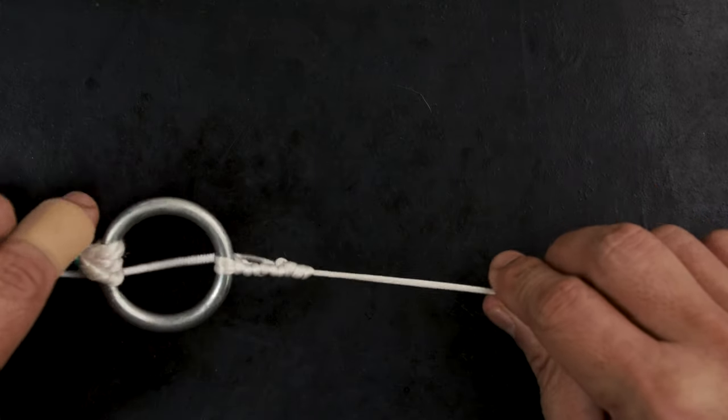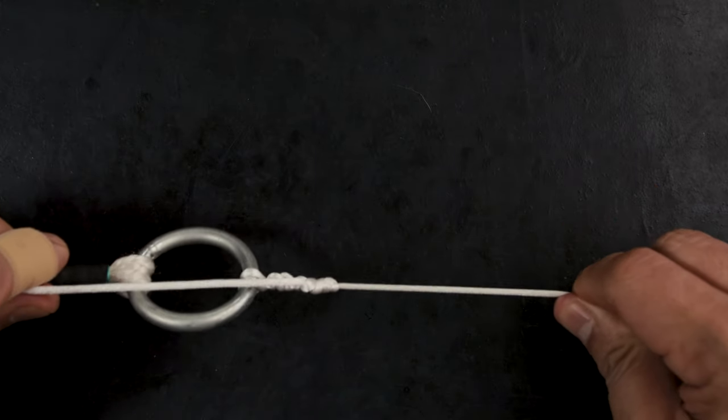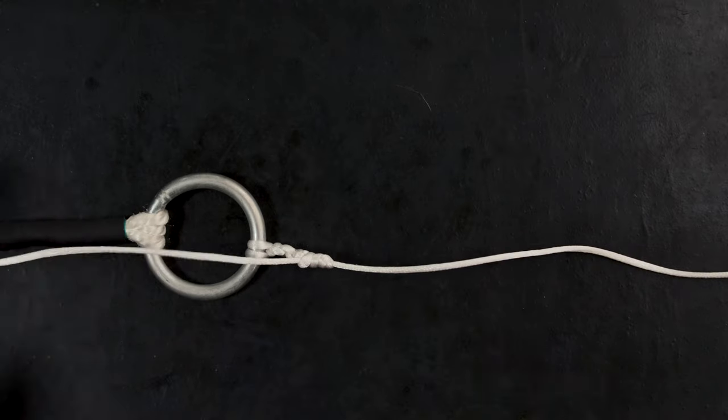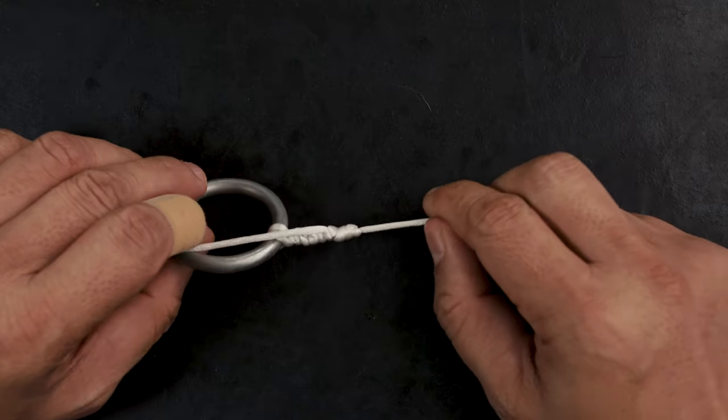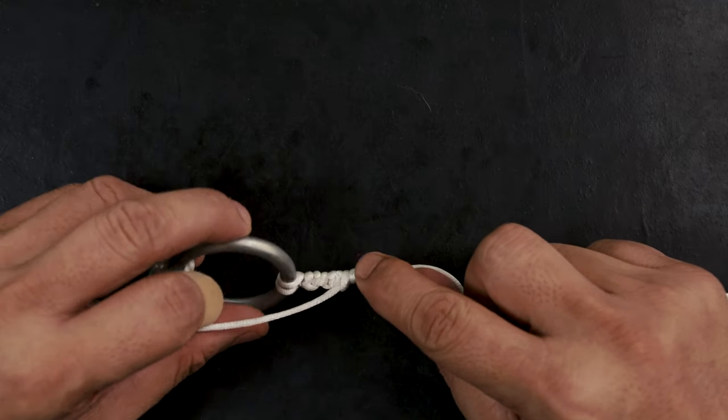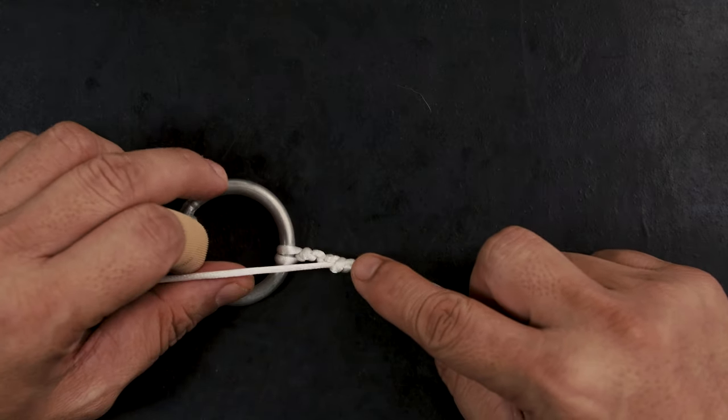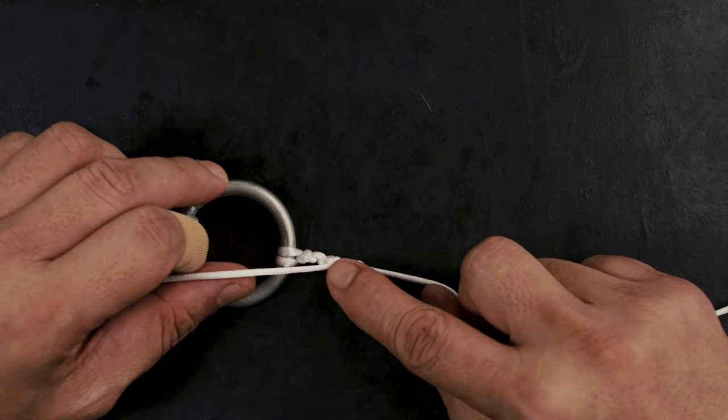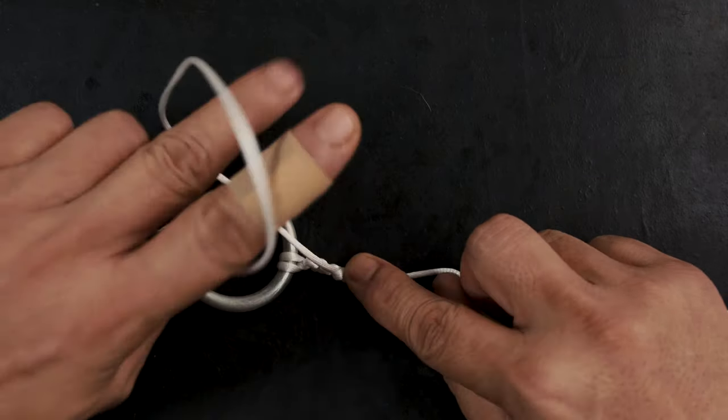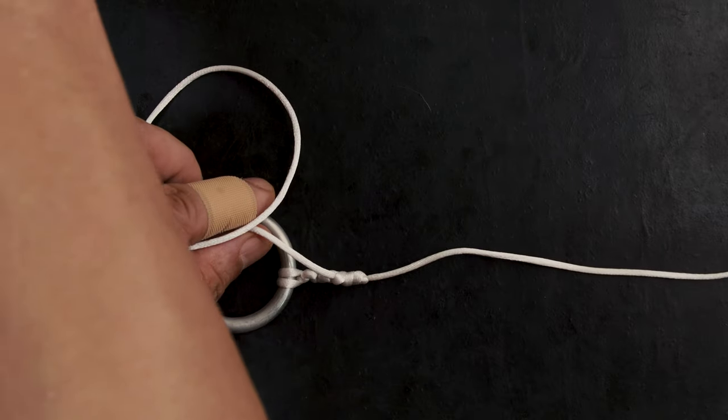All right, so there we go. I didn't really show this, but this is called the Risotto wrap. You could also use this to finish off your FG knots. So from here, it's just a matter of actually cutting.